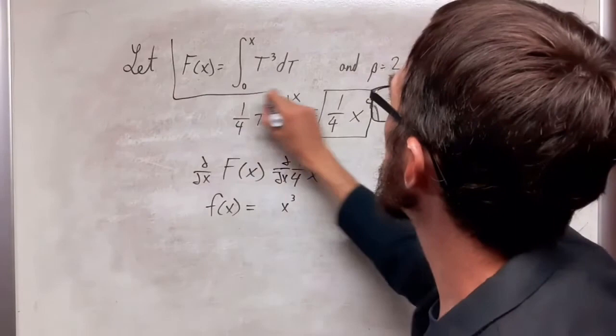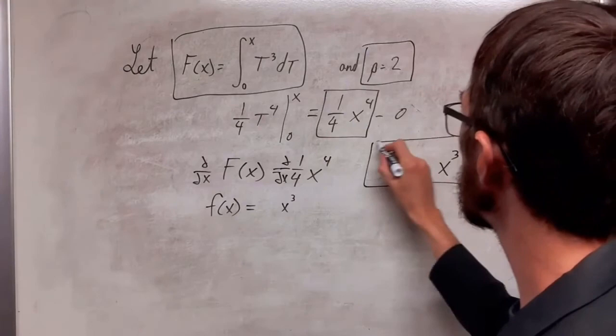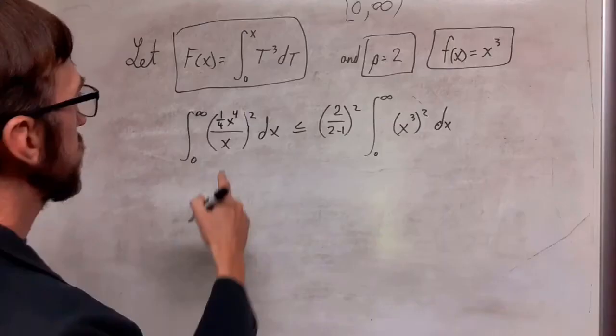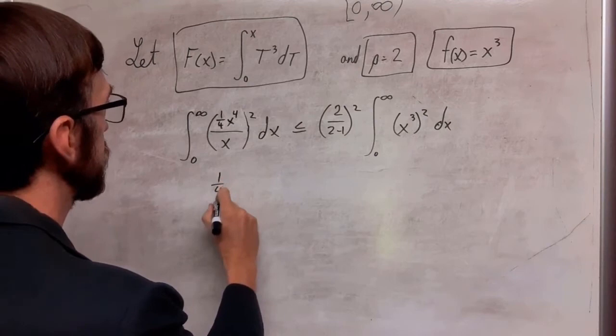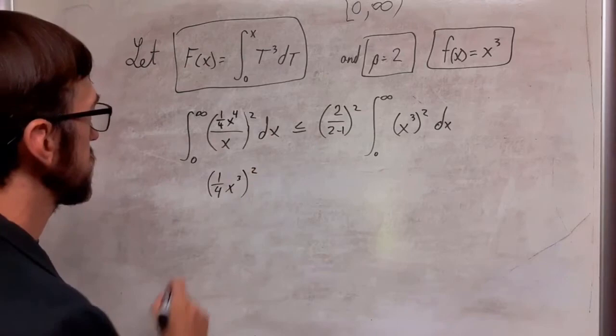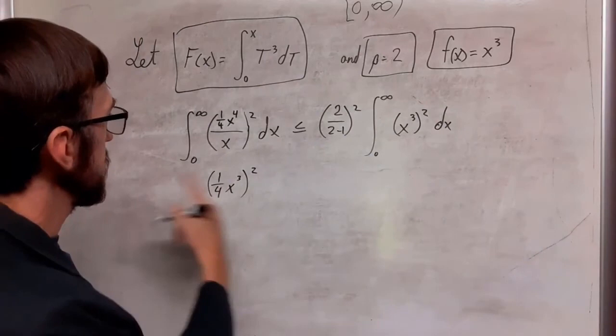So we need this piece of information, this piece of information, and this piece of information to insert into the inequality. We can reduce this piece here by this x, and so we're going to end up with 1/4 x cubed and that has to be squared.